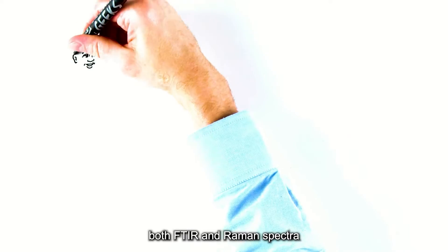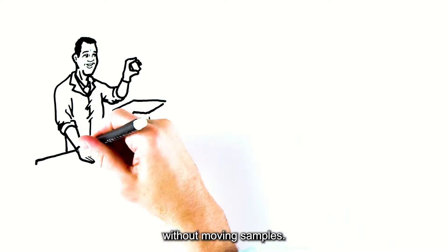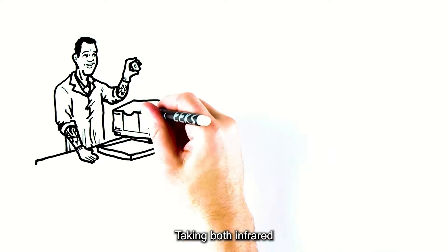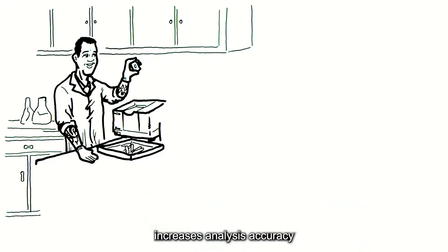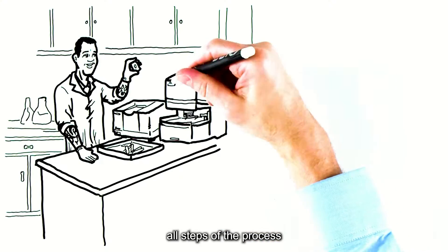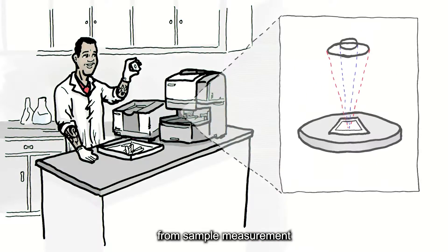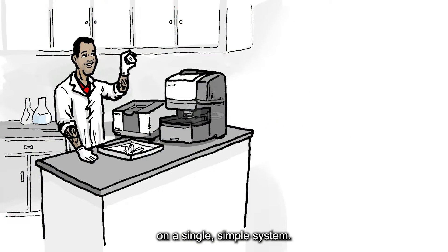With AirSight, both FTIR and Raman spectra can be measured from the same position without moving samples. Taking both infrared and Raman measurements from the same spot increases analysis accuracy and increases Arturo's efficiency by making it easy to perform all steps of the process from sample measurement to data analysis on a single, simple system.